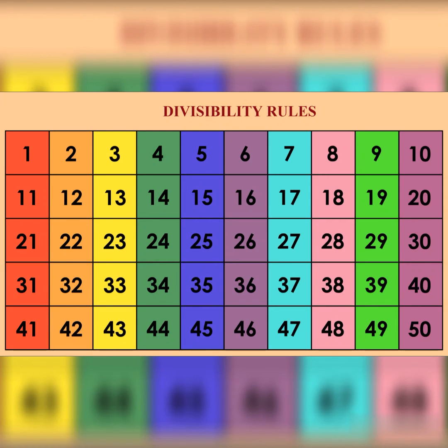Divisibility by 15 – a number is divisible by 15 if it is divisible by both 3 and 5.